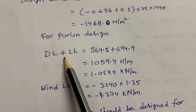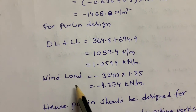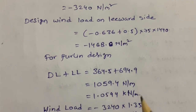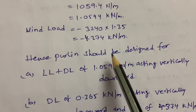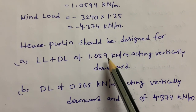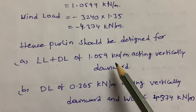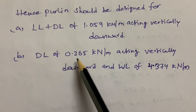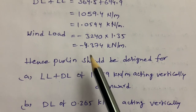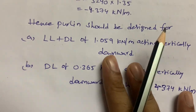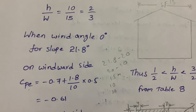For purlin design: dead load + live load = 364.5 + 694 = 1094 Newton per meter = 1.094 kN/m. Wind load = −3240 × 1.35 spacing = −4.374 kN/m. Therefore, the purlin should be designed for: live load + dead load of 1.094 kN/m acting vertically downward, dead load only of 0.365 kN/m acting vertically downward, and wind load of 4.374 kN/m acting vertically downward (negative value indicates uplift/suction direction).